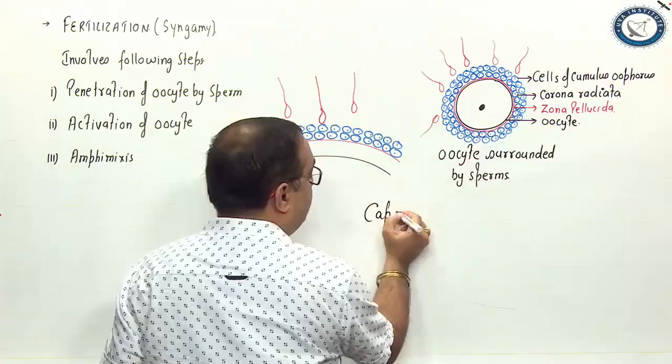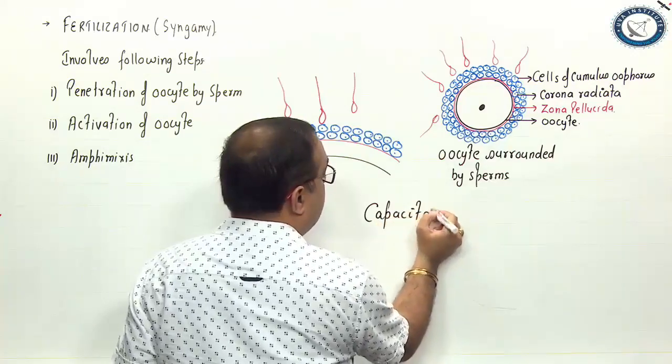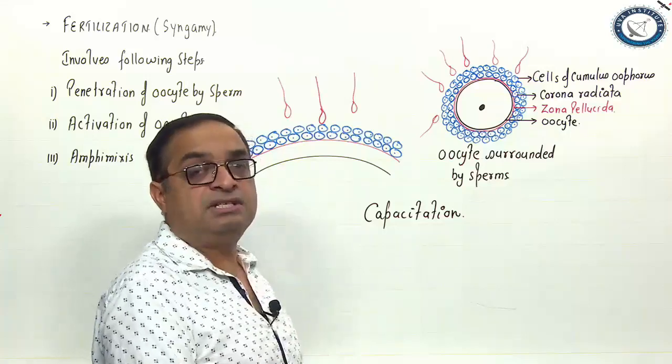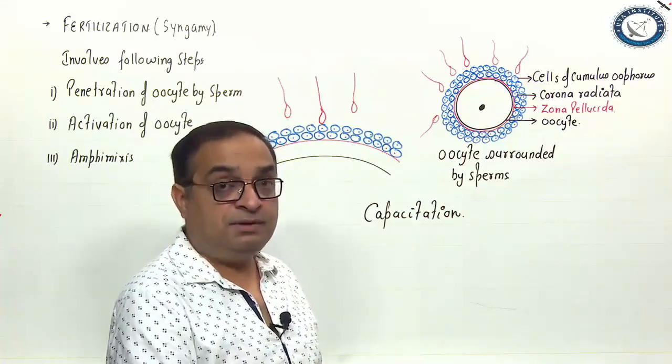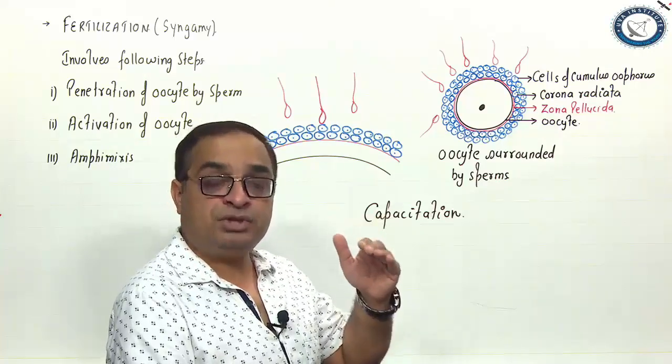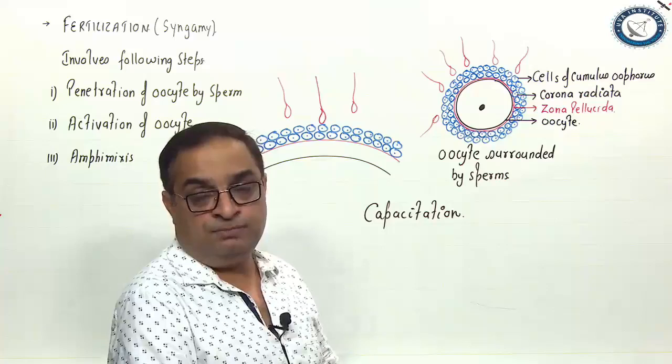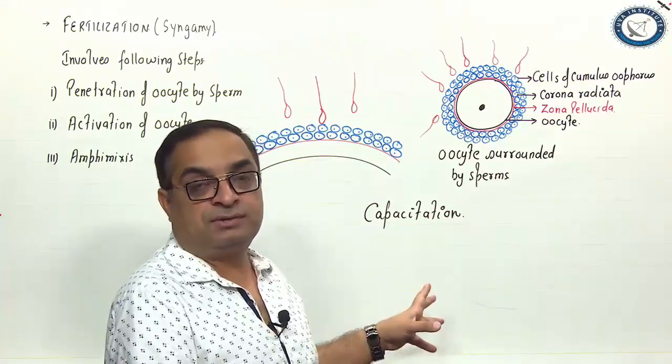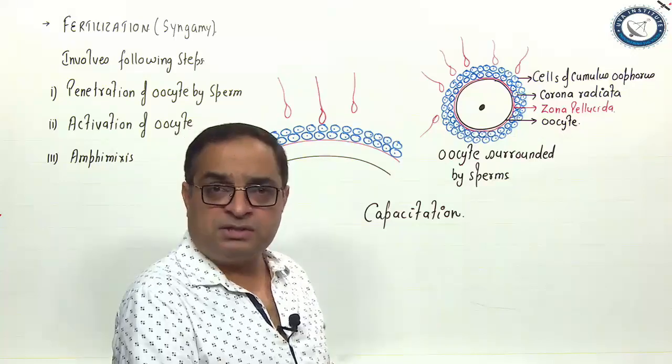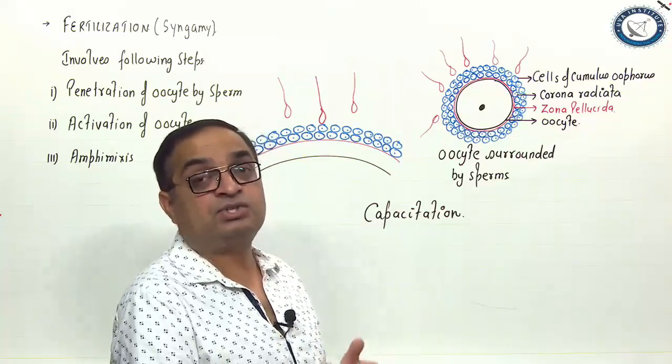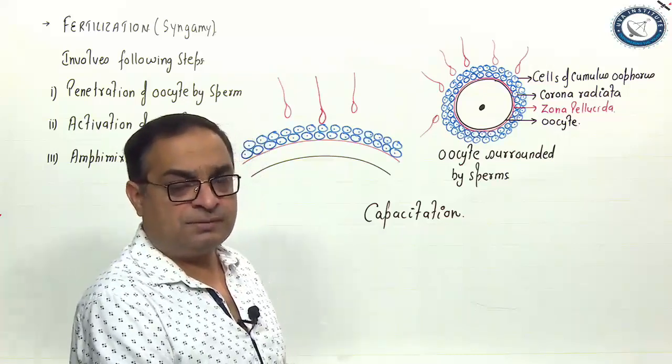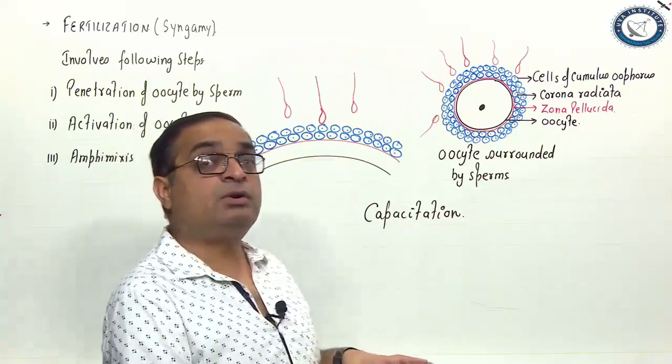What is capacitation? Capacitation is the process of final maturity which enables sperms to cause fertilization. Capacitation happens in the female reproductive tract. When the sperms are moving forward from vagina through cervix into uterus and fallopian tube, they are undergoing capacitation. This process involves coating and decoating of certain proteins from the sperm surface and exchange of ions. Calcium ions play an important role in capacitation. These sperms which have undergone capacitation only are capable of causing fertilization.